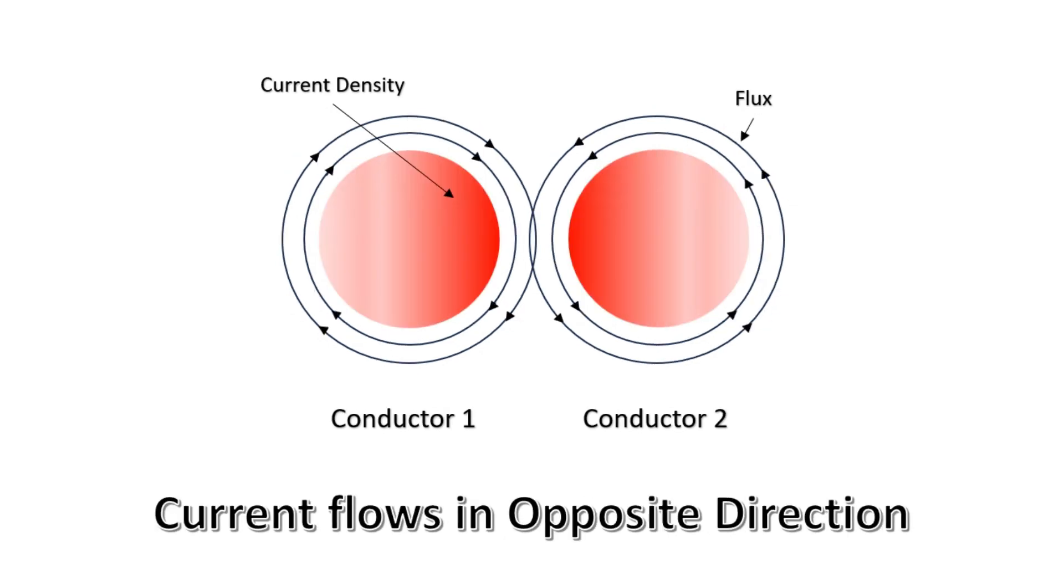When the conductors start carrying the current in opposite directions, a completely different picture is painted. In this situation, the current surprisingly turns to zero in the remote half of the conductor. The current starts to become congested at the part of the conductor that is nearer, causing an imbalance in the distribution.